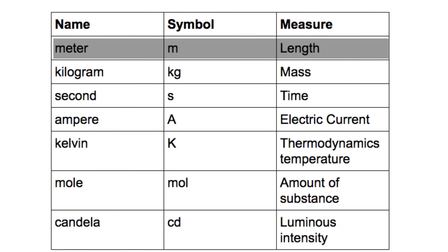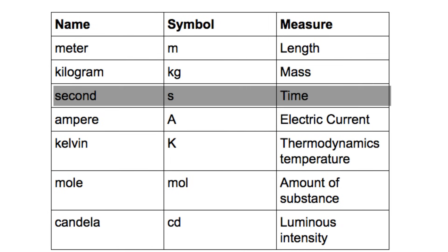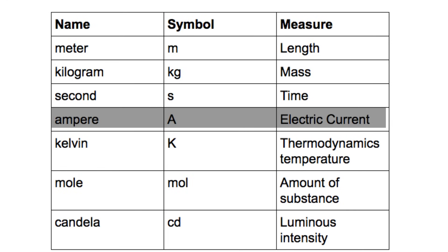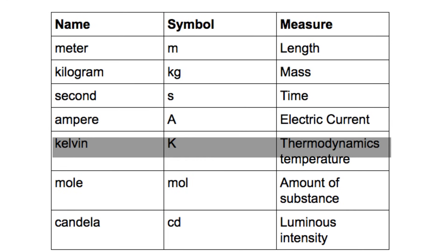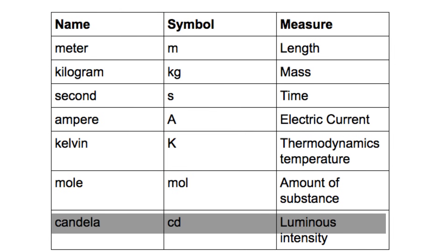They are meter for length, kilogram for mass, second for time, ampere for electric current, Kelvin for thermodynamic temperature, mole for the amount of substance, and candela for luminous intensity.